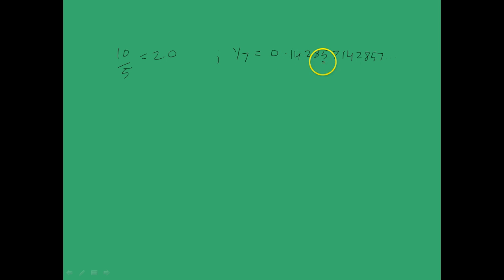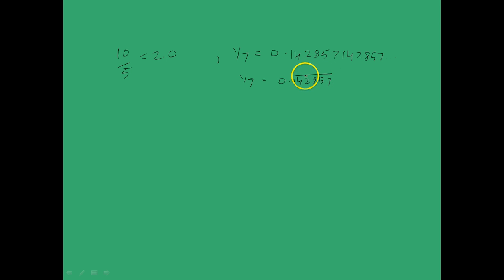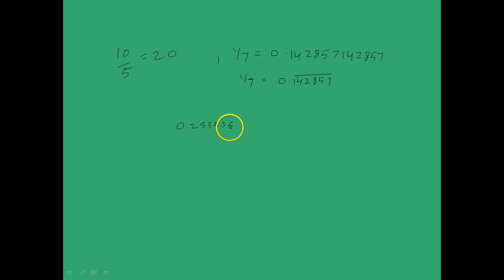There is a shorthand for representing non-terminating repeating sequences. If we wish to write 1 by 7, we write 0.142857 with a bar over the repeating block. We could also have a decimal where only part of the representation repeats — for example, 2.2535353... — which would be written as 2.253 with a bar over 53 only, since that is the repeating block.